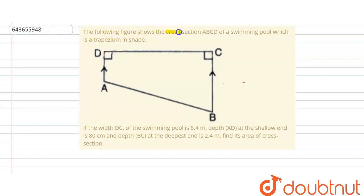Hello student, the problem is: the following figure shows the cross-section ABCD of a swimming pool which is a trapezium in shape.